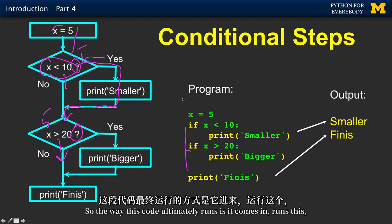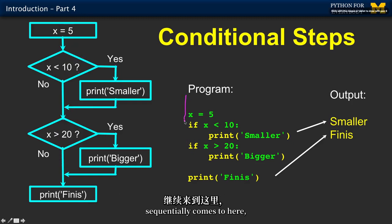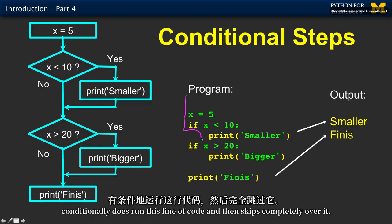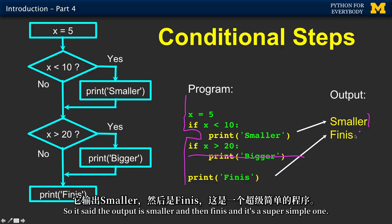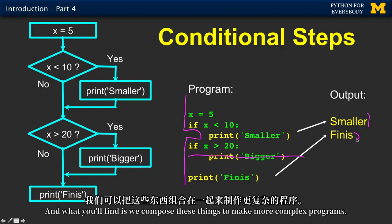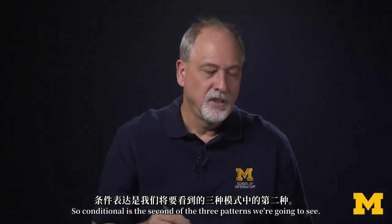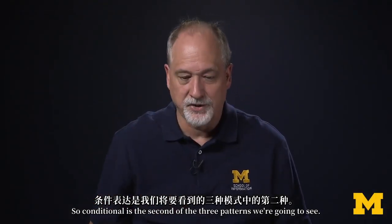We're asking the question. We're not changing x, we're just asking a question about x. So we skip right over this. So the way this code ultimately runs is it comes in, runs this, sequentially comes to here, conditionally does run this line of code, and then skips completely over it. So the output is smaller, and then finis. We compose these things to make more complex programs.